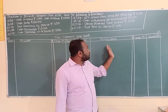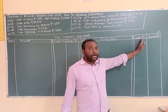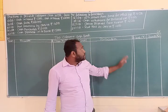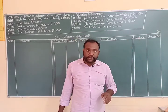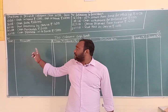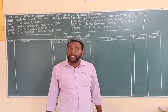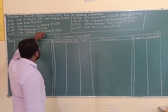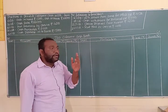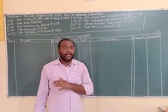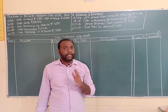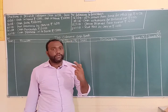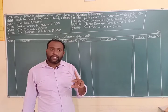In a contra entry, one transaction is treated in both columns — cash column and bank column. Suppose we treat it in the cash column on the debit side, we treat it in the bank column on the credit side, and vice versa. For example, cash deposited into bank: bank account debit to cash account — both accounts will be affected.